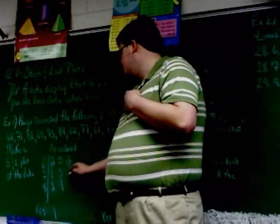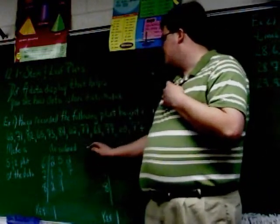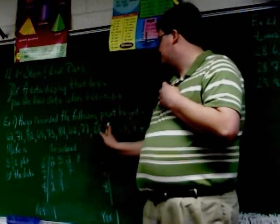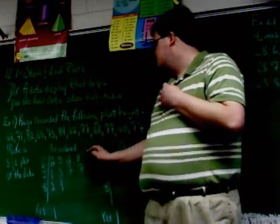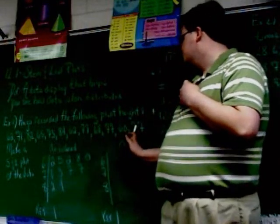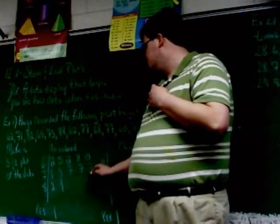67, so 7 next to the seven. 68, 8 next to the six. 77 again, 7 next to the seven. 63, 3 next to the six. 77, 7 next to the seven.